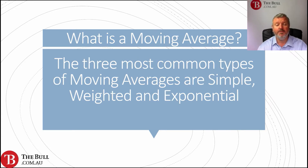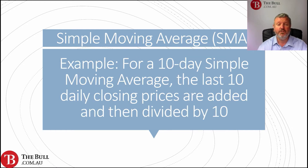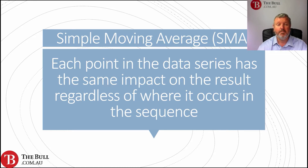The three most common types of moving average are the simple, the weighted, and the exponential. The simple moving average, or SMA, is calculated by summing all the past closing prices over the time period and then dividing by the number of events in that time period. For example, for a 10-day simple moving average, the last 10 daily closing prices are added together and then simply divided by 10. Each point in the data series has the same impact on the results, regardless of where it occurs in the sequence.